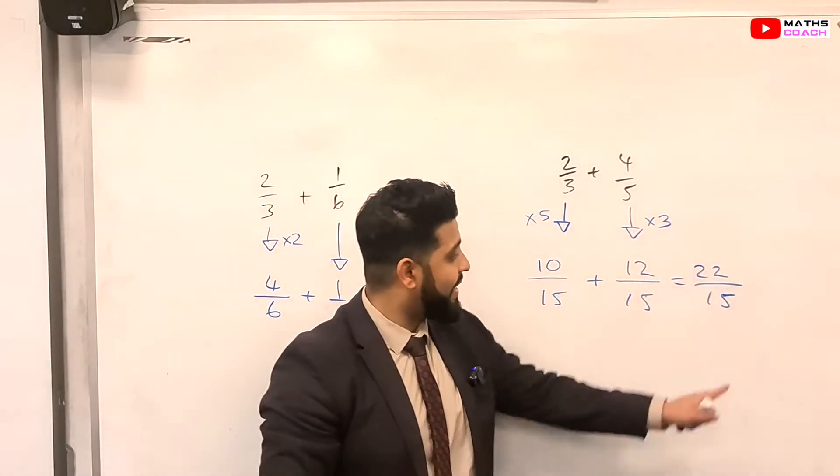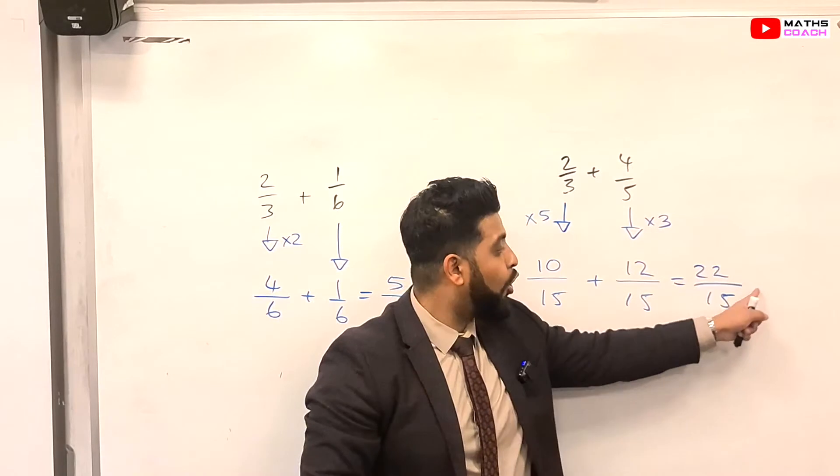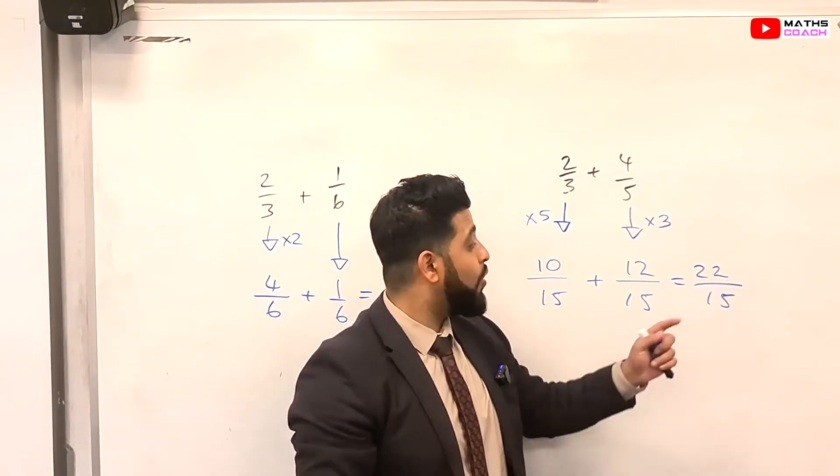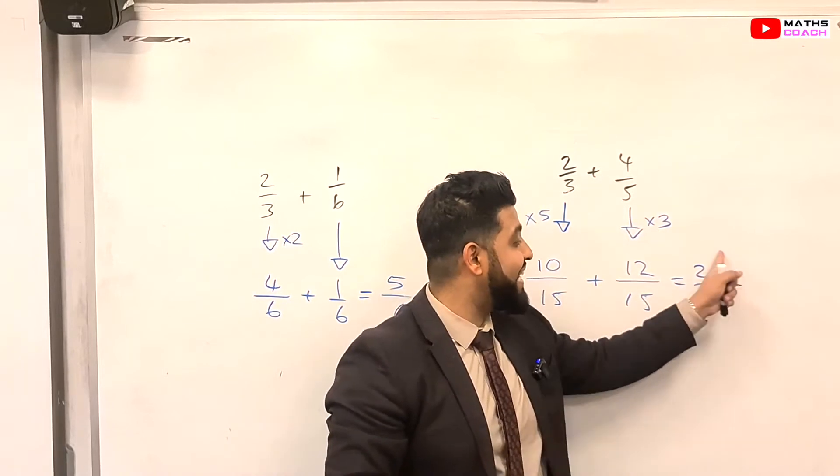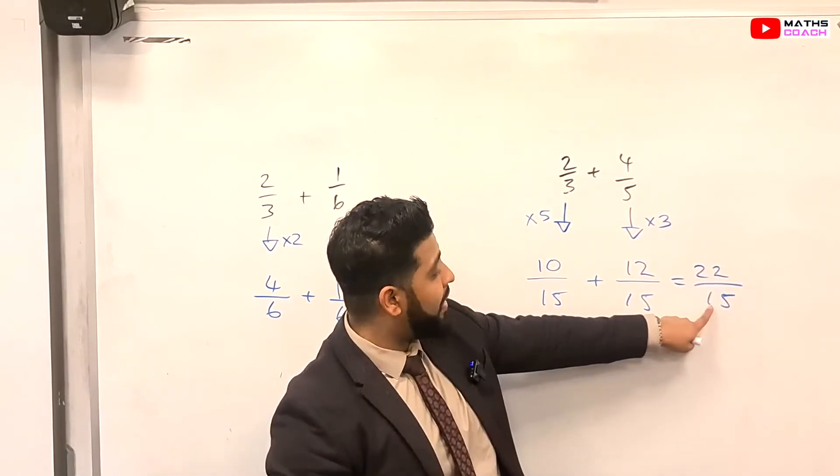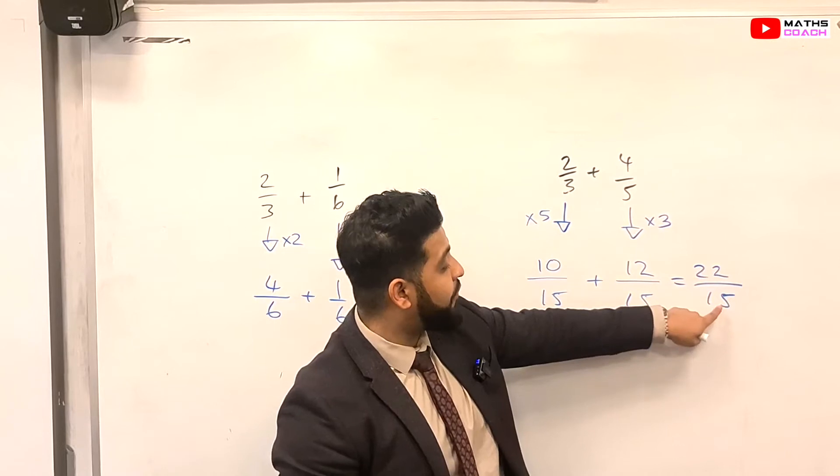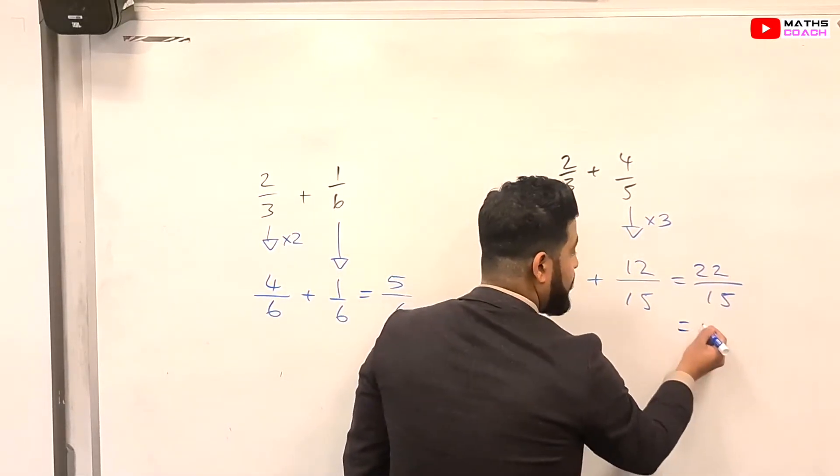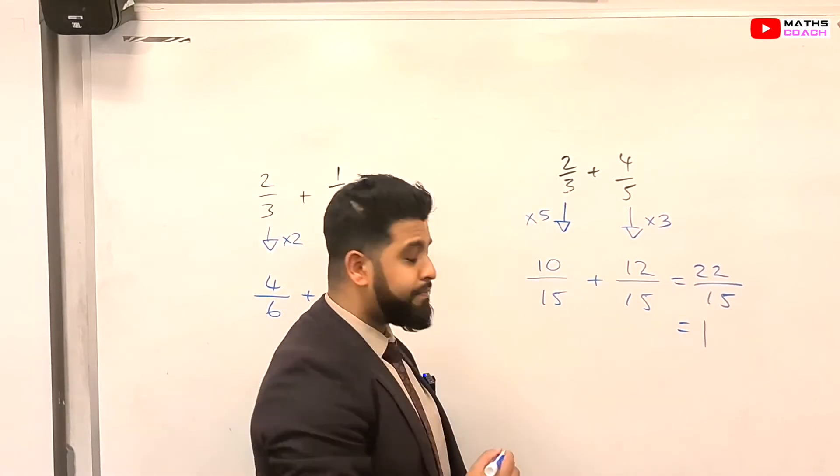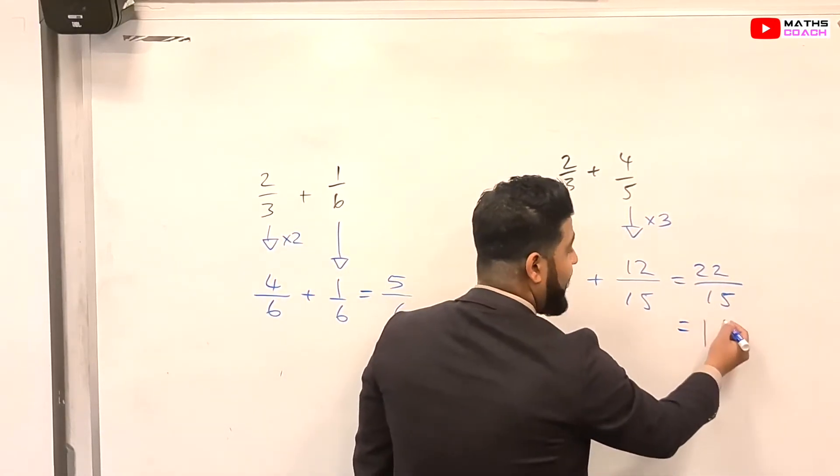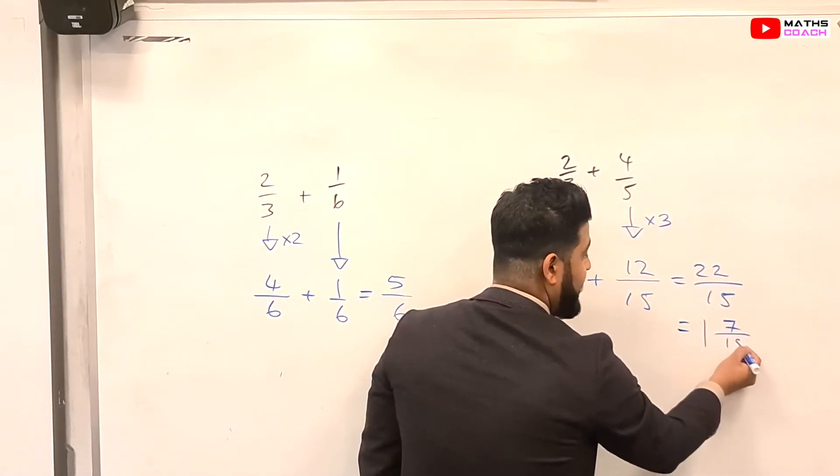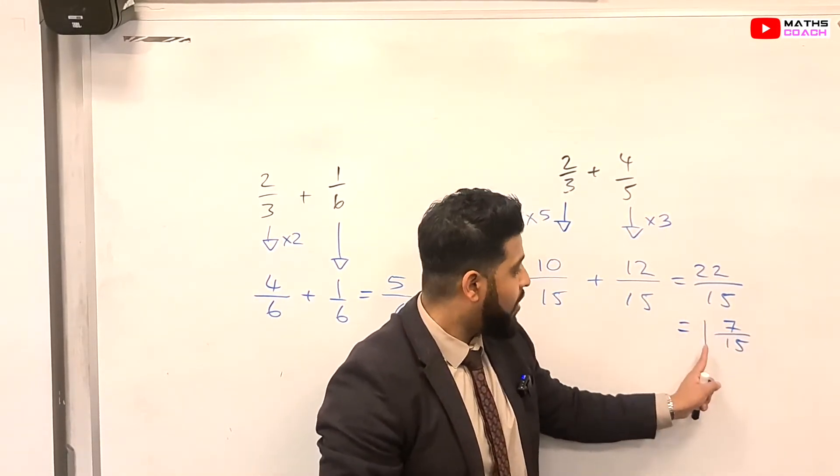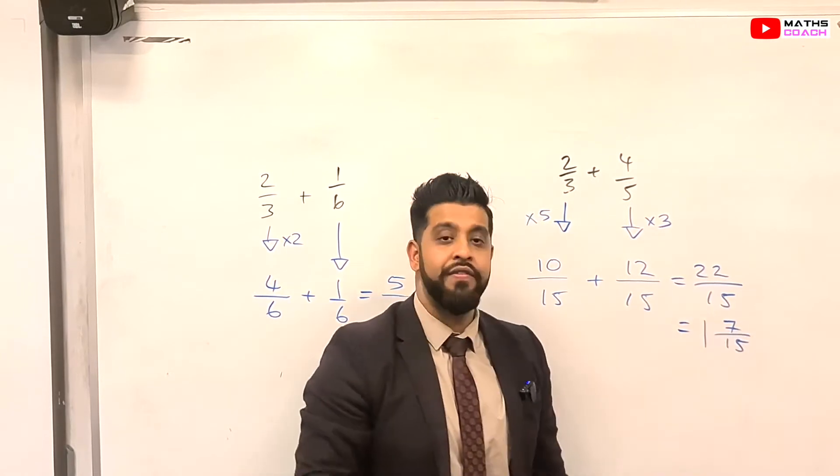Now, you will notice that this is actually a top-heavy fraction. It's all an improper fraction. So we can break this down as a mixed number. And to do that, we ask ourselves, how many times does 15 go into 22? 15 goes into 22 once, so you write a big 1 here. And the leftover is 7 out of 15. And we can't simplify the 7 out of 15 any further. So our final answer is 1 and 7 15ths.